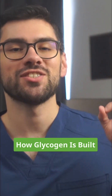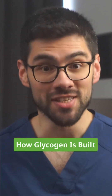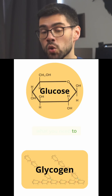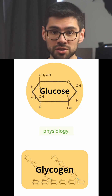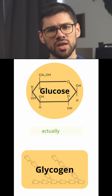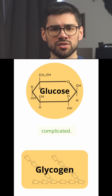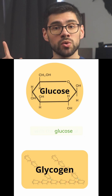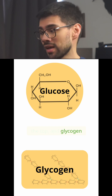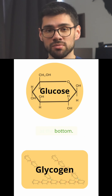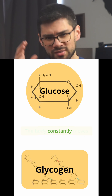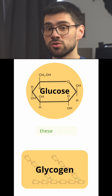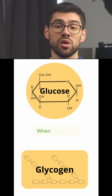We're going to talk about the glycogen storage diseases. Let's start with what you need to know about the physiology — it's actually not that complicated. Just imagine a diagram with glucose at the top and glycogen at the bottom. The body constantly moves back and forth between these two states.